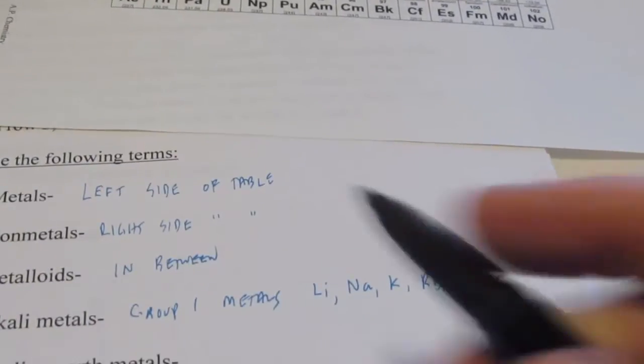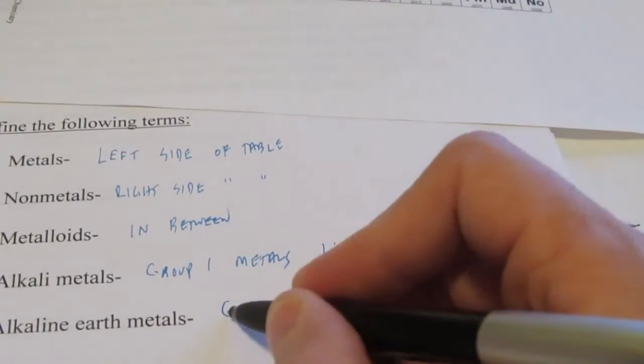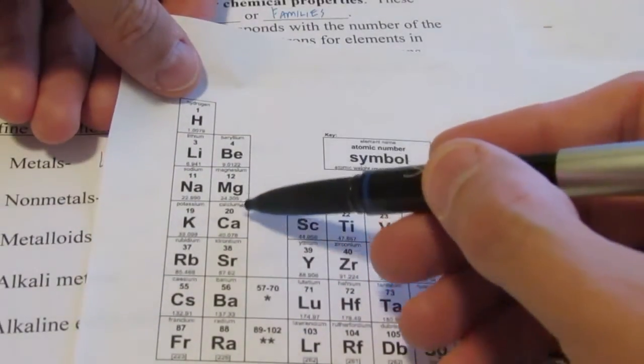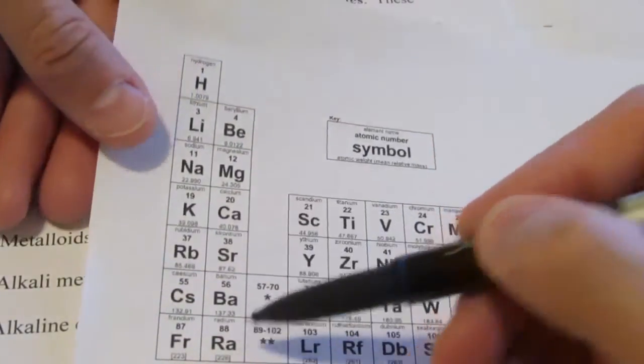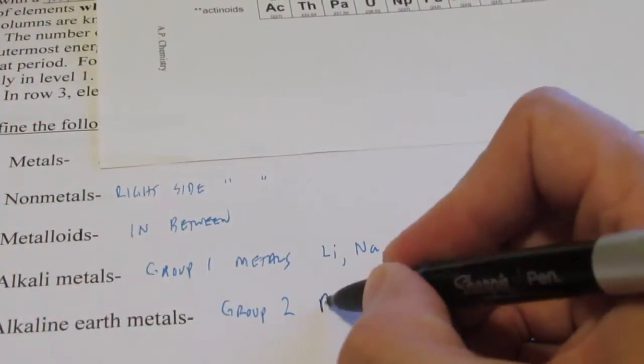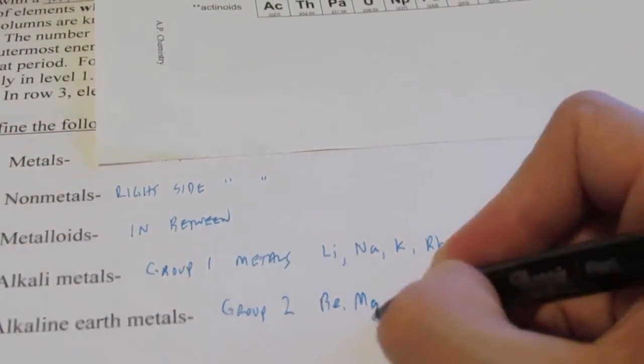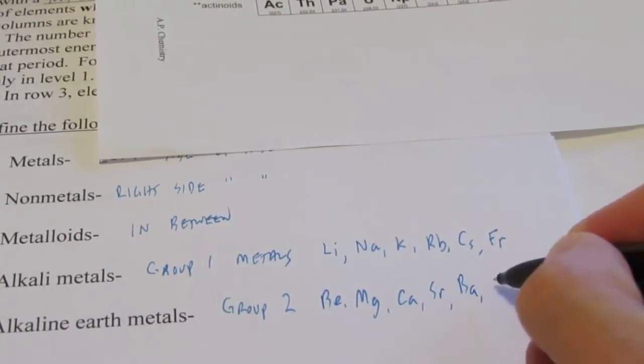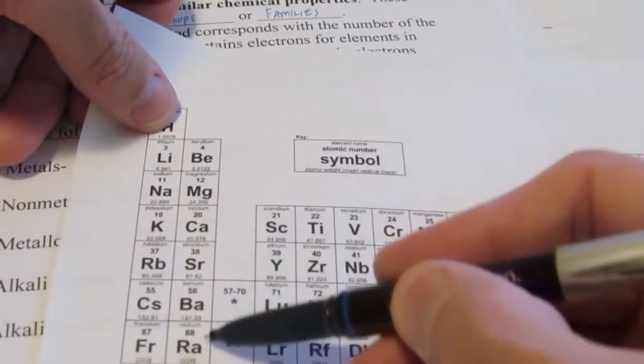The alkaline earth metals are members of group 2. They include beryllium, magnesium, calcium, strontium, barium, and radium. So we'll go ahead and list them: beryllium, magnesium, calcium, strontium, barium, and radium. These guys are called the alkaline earth metals.